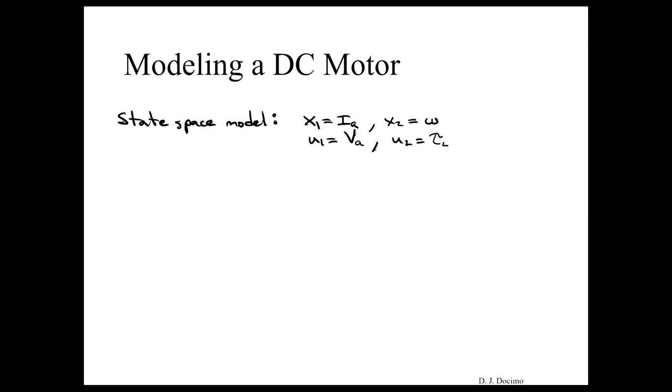So now to get our state space model, we're going to assign our states, which is going to be our current and our angular velocity. We have two inputs. One is the voltage source coming into the armature circuit, say from a battery, for example. The other one is going to be that load torque.